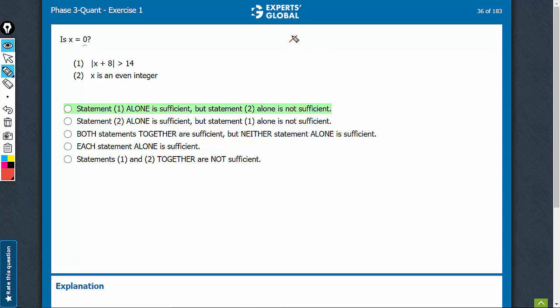Statement 1: x plus 8 itself can be greater than 14 or x plus 8 can be less than negative 14. This leads to x greater than 6 or x less than negative 22.